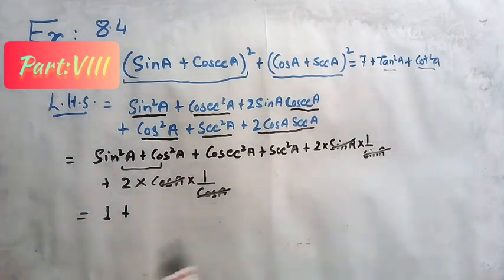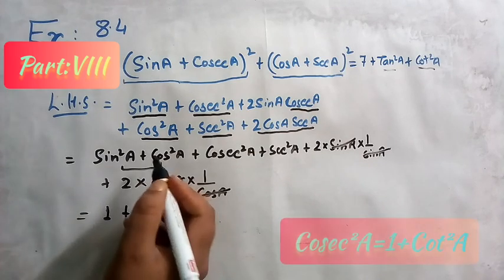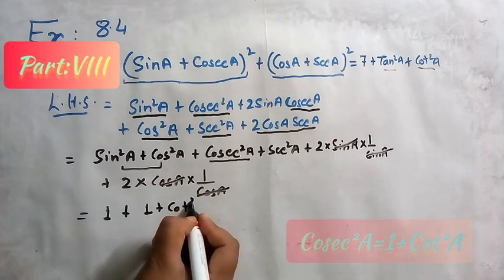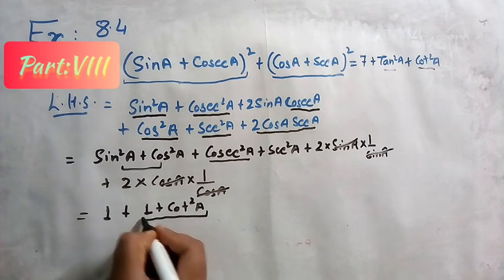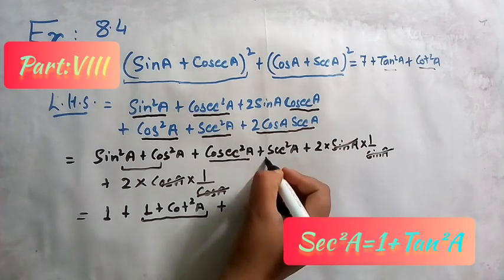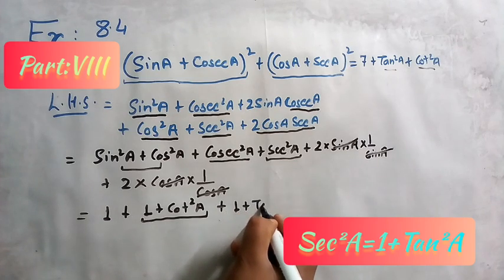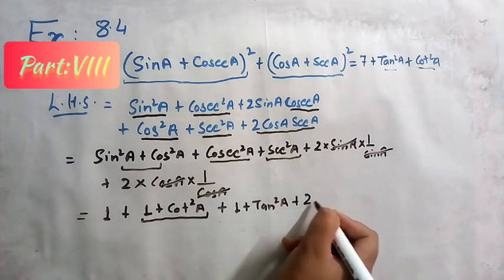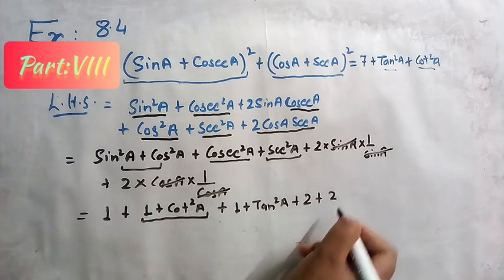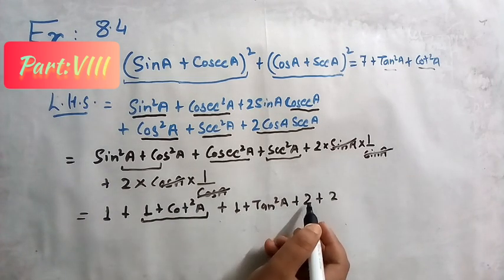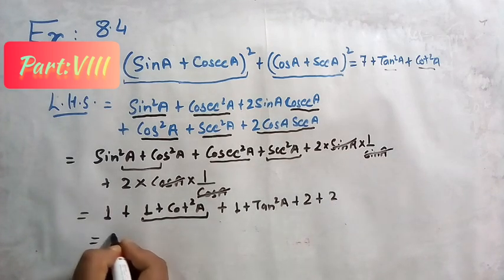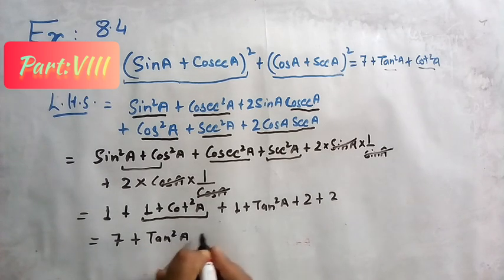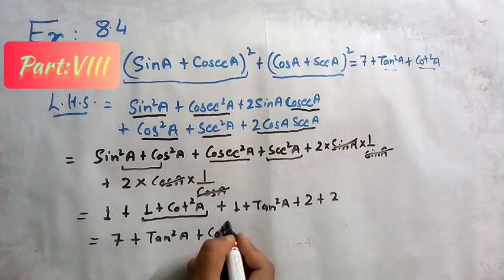We know cosec²A = 1 + cot²A and sec²A = 1 + tan²A. So the expression becomes: 1 + (1 + cot²A) + (1 + tan²A) + 2 + 2. Adding the constants: 1 + 1 + 1 + 2 + 2 = 7. Therefore the result is 7 + tan²A + cot²A, which equals the right hand side.